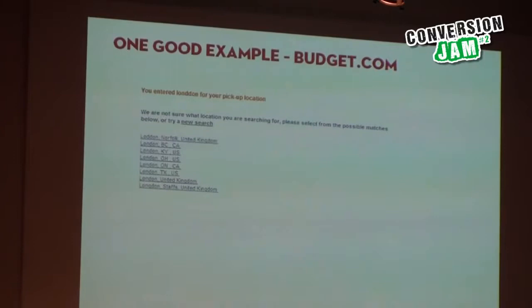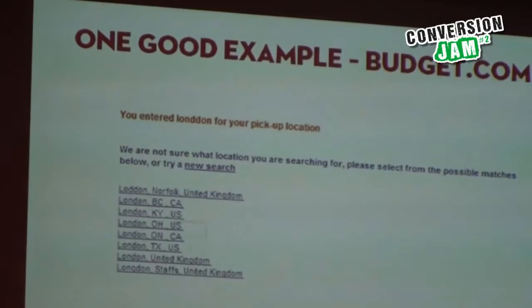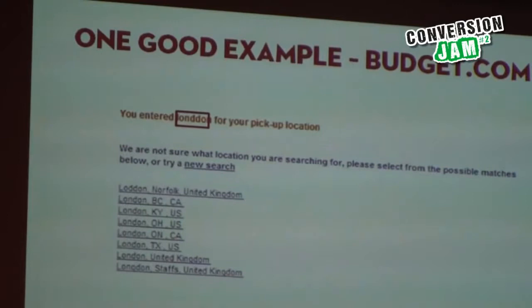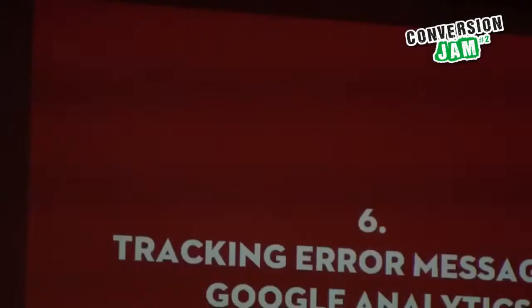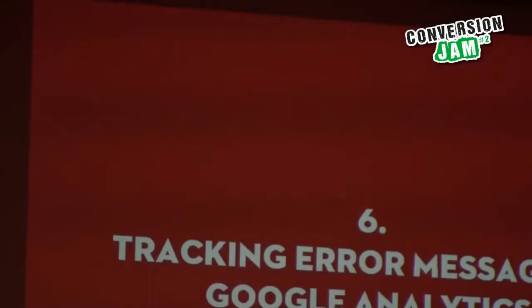I think this is a really good example. I searched for "Londonn" — with two D's on purpose while researching this — and it basically said: "We are not sure what location you are searching." It's like: you did nothing wrong but we haven't figured it out yet. So you can check from any of these top results or you can try a new search. That's a very friendly, easy way of doing it. In the beginning it says what happened: you entered two D's.